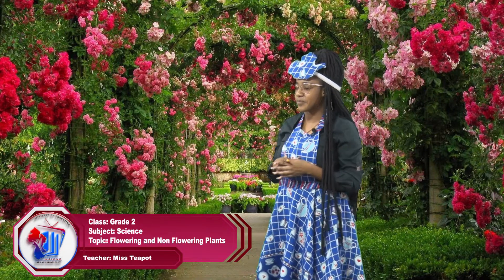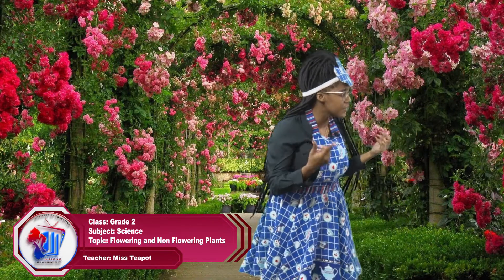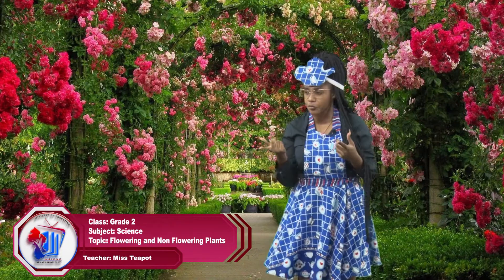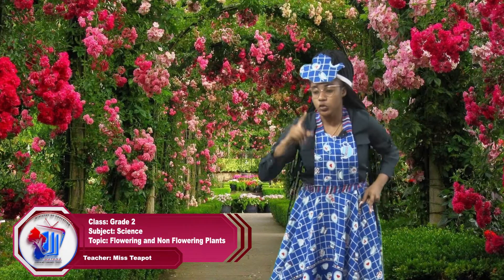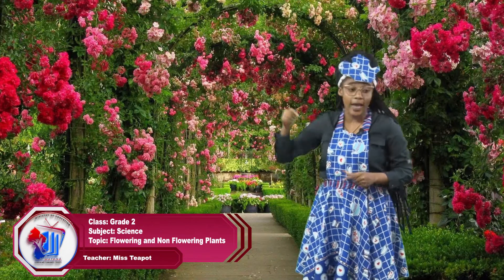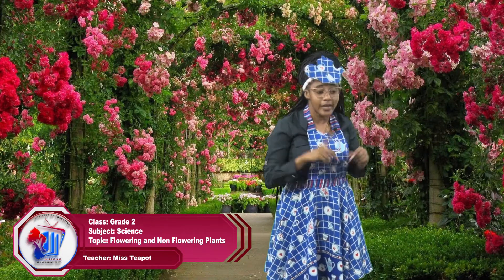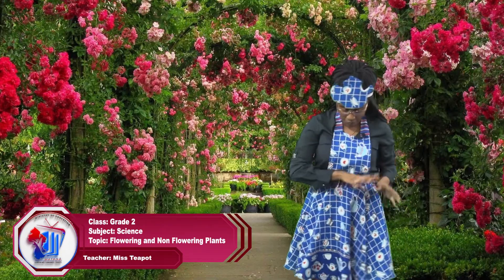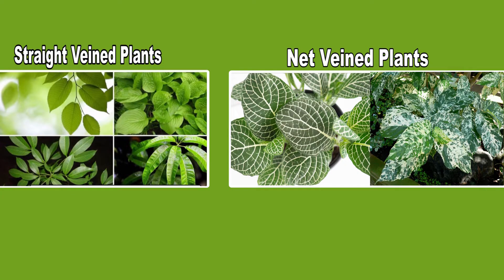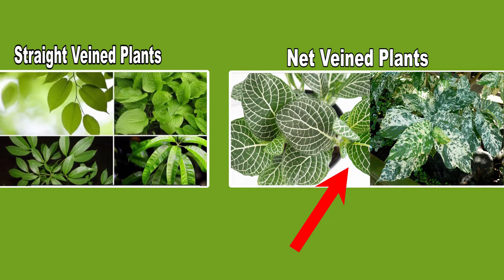Boys and girls, let's think of something else. How can we group them? Remember, we spoke about straight and net vein leaves. Let's group them like that — let's move all our straight vein leaf plants over here and the net vein ones over here. They're looking pretty good — two groups.